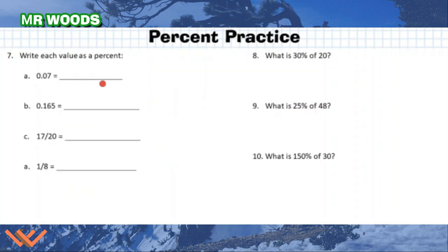Write each value as a percent. Well, 0.07 times 100. Again, so I go 1, 2, and that is equal to 7%. 0.165 is equal to, what is that as a percent? Again, 1, 2, so I'm going to have 16.5%.